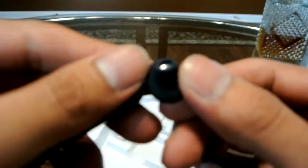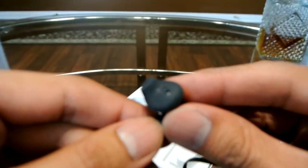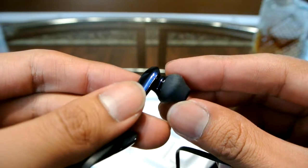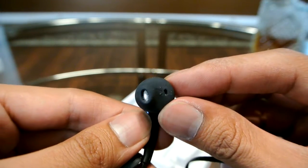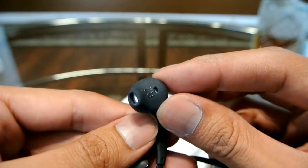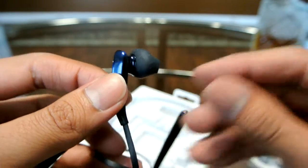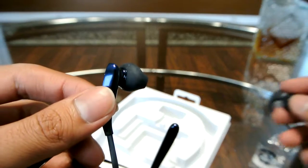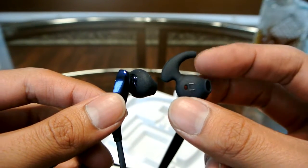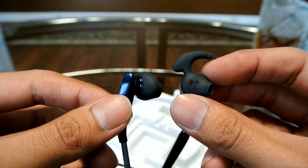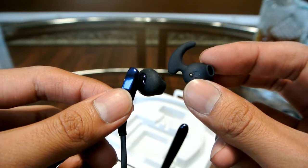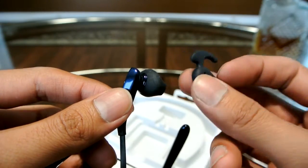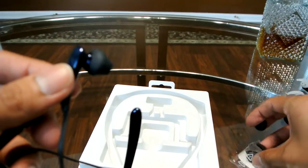The earbuds it comes with I would not recommend if you are doing any activity with a lot of movement, like if you are taking them to the gym. They do fall out fairly easy. But they did think of that. They also provide an ear piece that has a little piece that gets stuck into your ear. So if you are going to use them for the gym or if you are running with them, switch them out for these. That is also included in the box.